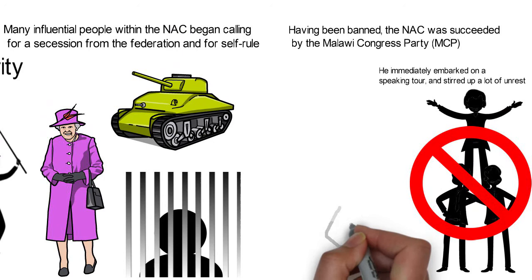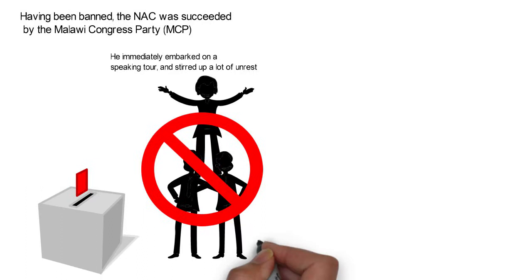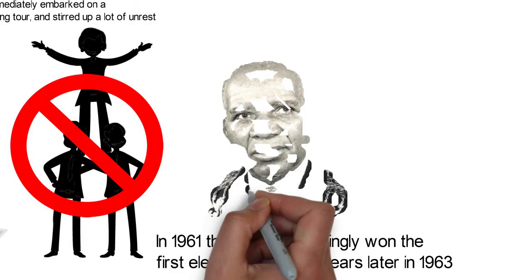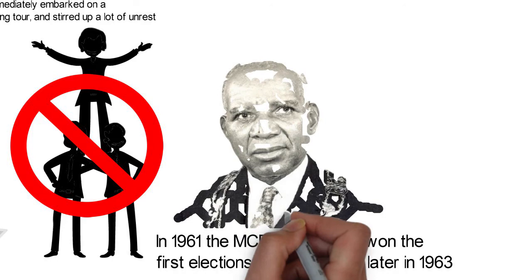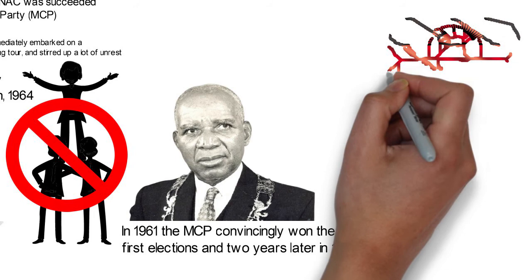Soon it became clear to the British that independence was a must. Hastings Banda was released in 1960 and allowed to return to prepare for the coming elections. In 1961, the MCP convincingly won the first elections, and two years later in 1963 the Federation of Rhodesia and Nyasaland was dissolved and Nyasaland gained self-governance, with Hastings Banda as Prime Minister. Nyasaland became fully independent on the 6th of July 1964, and under a new constitution it became the Republic of Malawi, with Banda as its first president.